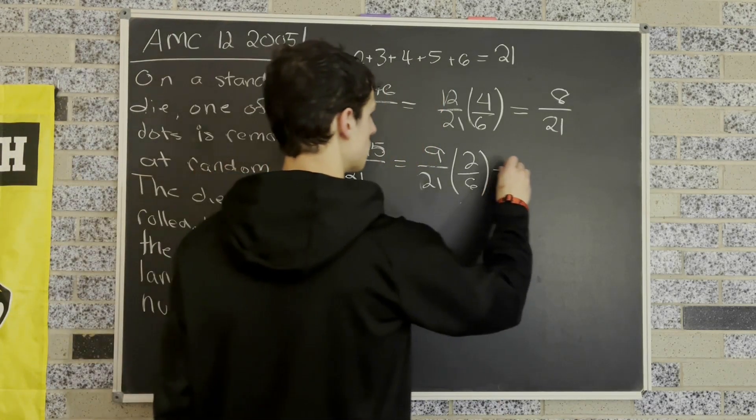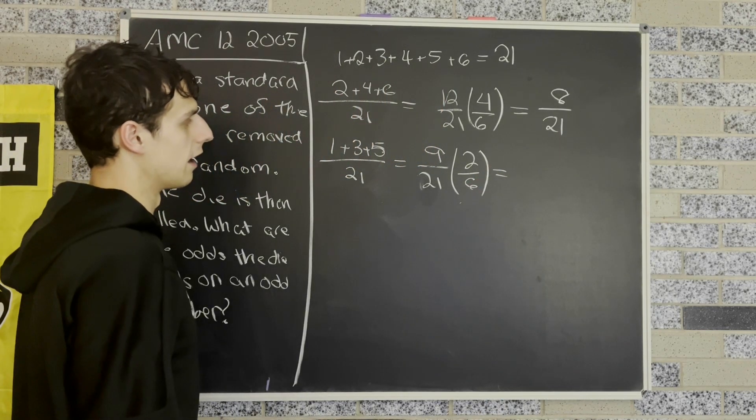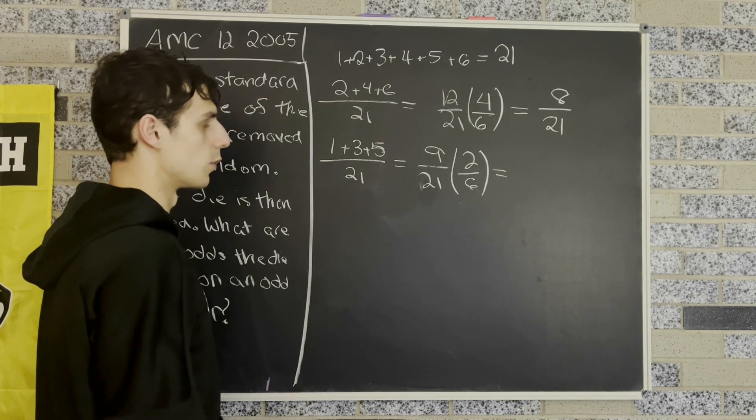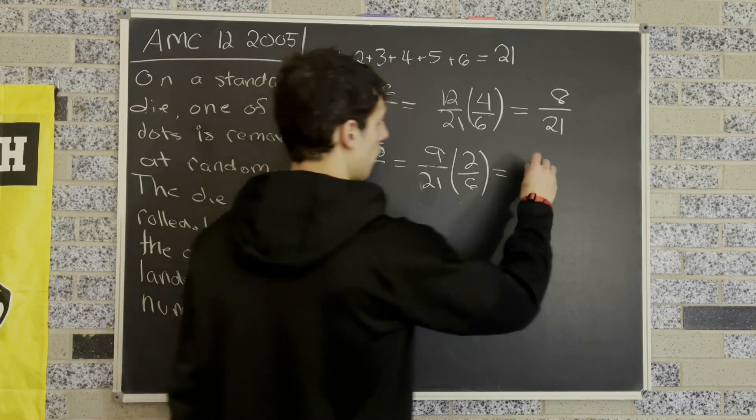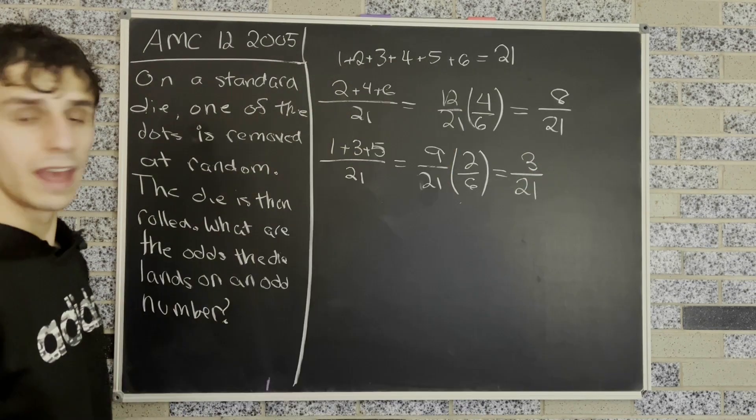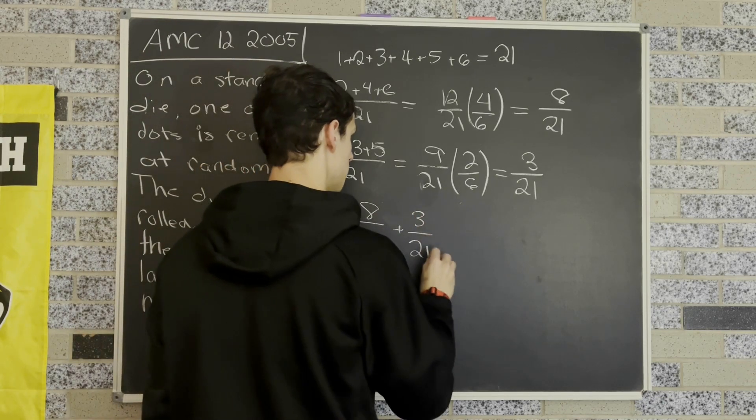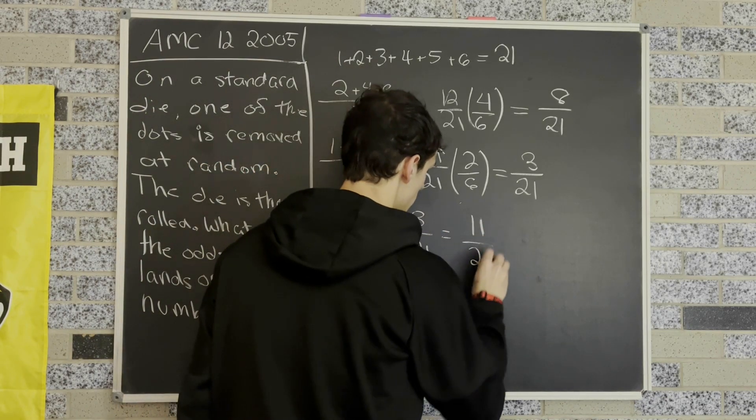And similarly here, we can do something similar. We have 3 over 2 times 2 divided by 21, so that's going to be 3 over 21. And now all we have to do is add them together. So we have 8 over 21 plus 3 over 21, and that's going to be 11 over 21.